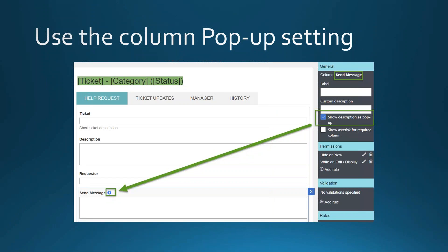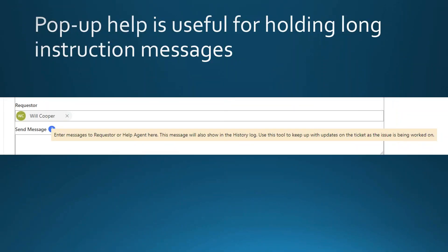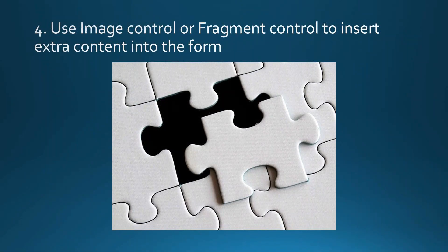In the field settings, there's a 'Show Description as Pop-up' option that enables pop-up help — especially useful for long help descriptions you don't want visible all the time. This shows the description only when a user needs extra help. Another option is to insert a process diagram using an image control, which can show users the help desk ticket workflow directly inside the form.